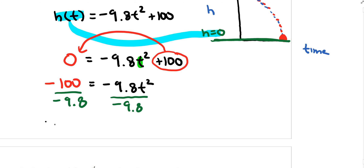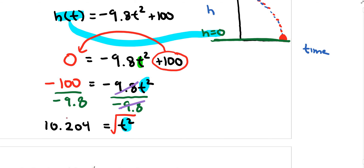Dividing both sides by -9.8 gives positive 10.204 = t². To eliminate the squared power, take the square root of both sides. The square root of 10.204 on a calculator gives approximately 3.19. So it takes about 3.19 seconds for the ball to hit the ground.